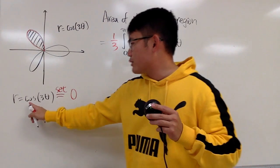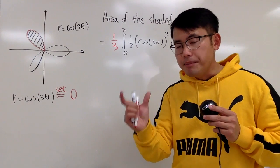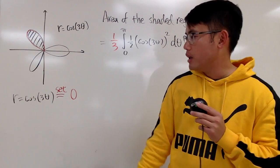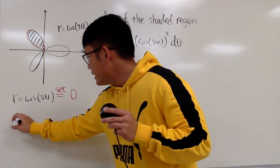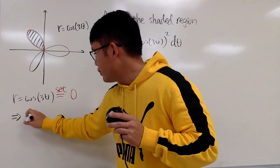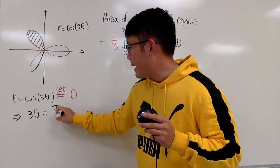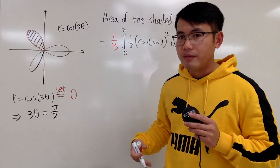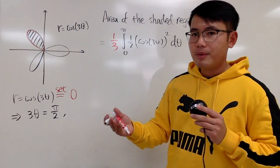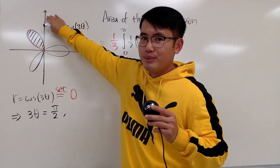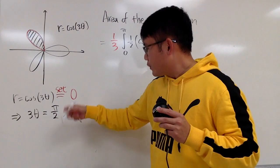And you have to ask yourself, cosine of what will give you 0? Well, the first input has to be pi over 2. But the input right here is not just theta. It's 3 theta. So this implies you need to have 3 theta being, the first possibility is pi over 2. Cosine of pi over 2 will give you 0. And then the next possibility is right here, which is 3 pi over 2.